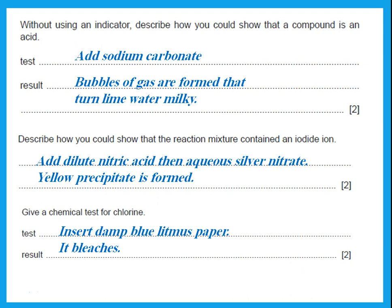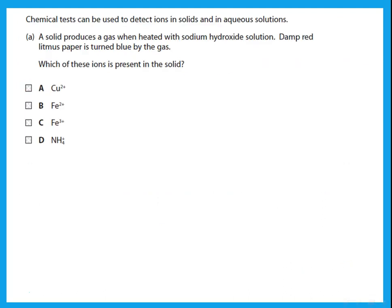Give a chemical test for chlorine. The test for chlorine: insert damp blue litmus paper — chlorine bleaches it. This applies to chlorine as a gas or chlorine dissolved in water.